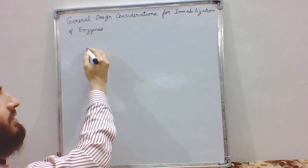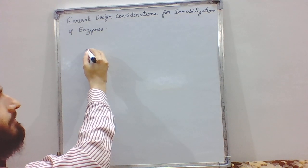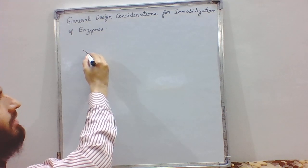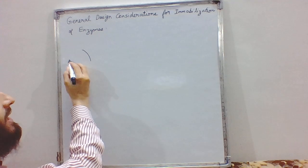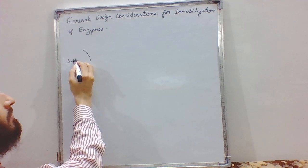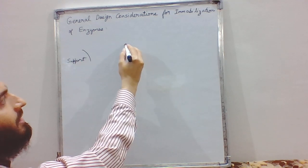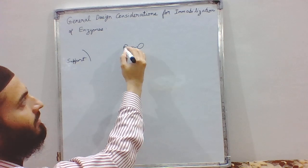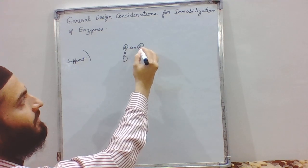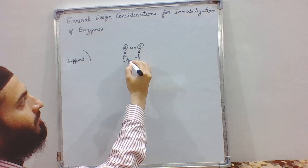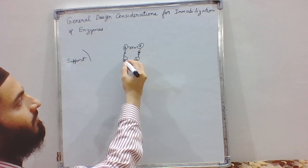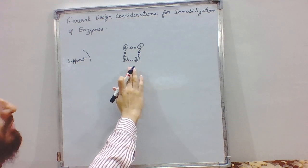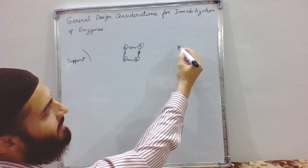In the methods of enzyme immobilization we had seen three different types of methods: carrier-based methods, in which we had a support; carrier-free methods, in which the enzymes were attached to each other in the form of crystals or aggregates free of support; and membrane-based methods.